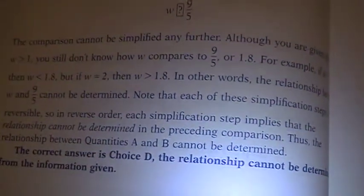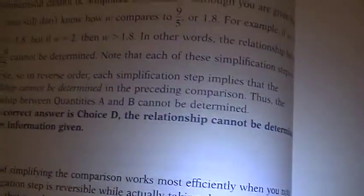And so 9 fifths doesn't give us any clear sense if it's greater than 1, less than 1, because it could be something in between. So this one is cannot be determined.